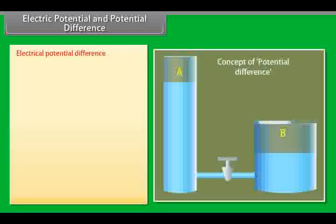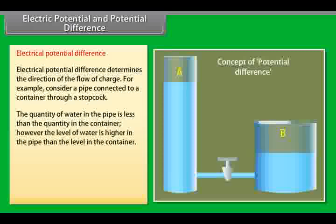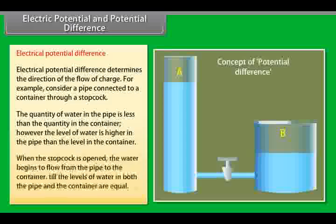Electrical potential difference. Electrical potential difference determines the direction of the flow of charge. For example, consider a pipe connected to a container through a stop cork. The quantity of water in the pipe is less than the quantity in the container. However, the level of water is higher in the pipe than the level in the container. When the stop cork is opened, the water begins to flow from the pipe to the container until the levels of water in both are equal.